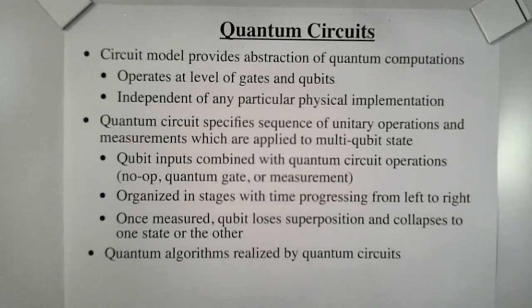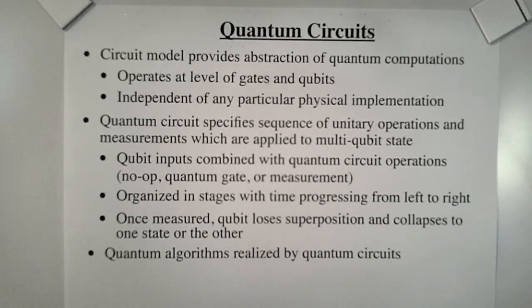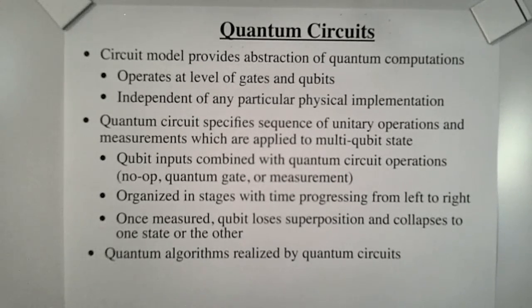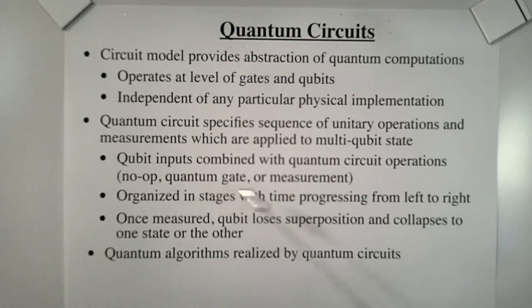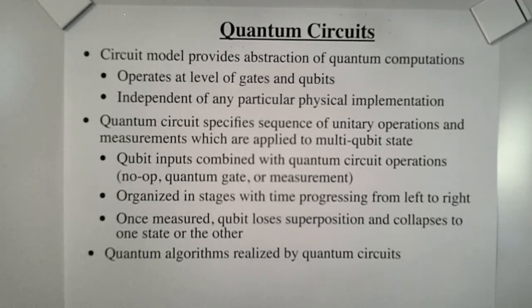Quantum algorithms are implemented by quantum circuits. The quantum circuit model provides an abstraction of quantum computations. It operates at the level of gates and qubits, and is independent of any particular physical implementation. A quantum circuit specifies a sequence of unitary operations and measurements, which are applied to a multi-qubit state. It consists of qubit inputs combined with quantum circuit operations, such as a no-op gate, a quantum gate, or a measurement. A quantum circuit is organized in stages with time progressing from left to right. Once measured, a qubit loses its superposition and collapses to one state or the other.